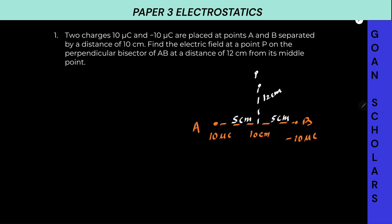If you remember, electric field due to a positive charge is radially outward, and electric field due to a negative charge is radially inward. So let's draw the electric field due to the charge at A — which is 10 micro coulomb — radially outward along the line joining the charge and point P. The electric field at point P due to the negative charge B will be along the line joining, so it will be in this direction. This is our electric field EA and this is our EB.